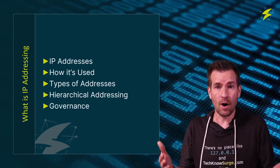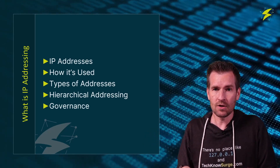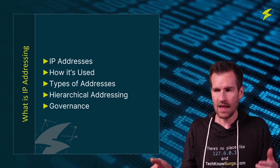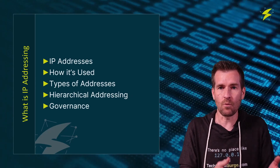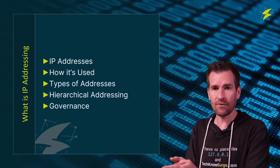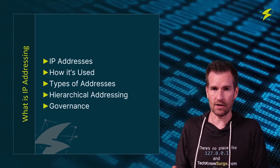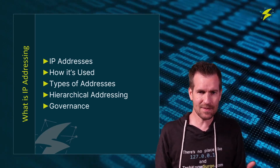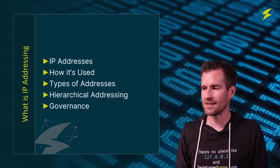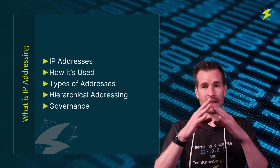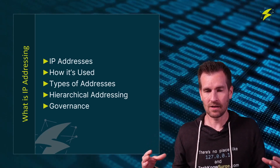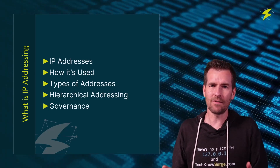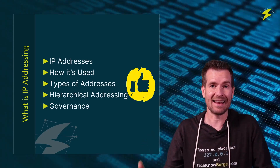In this video, we started out by talking about the different components of an IP address — how it uses binary, although most of the time what we see is the decimal form, and how it's separated into four octets. Then we talked about how it's used, how it routes traffic from one location to another, and how it uses headers in order to direct that traffic to get to its final destination. Within that header there is a destination IP address and a source IP address. Then we got into different types of addresses — whether unicast, multicast, or broadcast. We talked about hierarchical addressing where we can break down IP addresses into smaller and smaller chunks and have organized routing. And finally we talked about the governance that handles the handing out of these IP addresses.